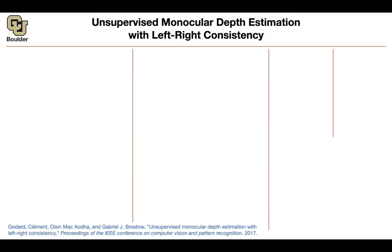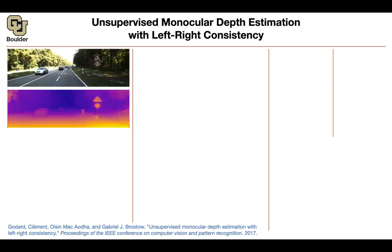The first paper is about monocular depth estimation where you are trying to satisfy some left-right consistency. The task is: at test time there is only one image, and you want to infer the corresponding depth from that single image. Some objects are closer — for instance, a nearby car — while other cars are further away, and we want to infer that from only one image. So a single image goes in, you have a convolutional neural network, it gives you the predicted depth, and the question is how you train to learn that function.